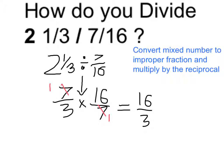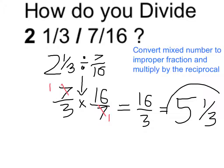Over 3 times 1, which is just 3. Now 3 goes into 16 five full times, so the whole number is 5. And 3 times 5 is 15, that gives us 1 left over to get to 16. So that means it's going to be 1/3. The final answer is 5 and 1/3.